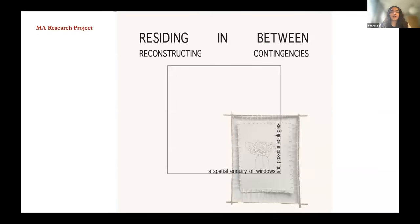My MA project is called Residing in Between: Reconstructing Contingencies — a spatial enquiry of windows and possible ecologies. The project looks at a very small threshold space, which is the window. The window is used as a spatial construct to look at different themes I was exploring. The nature of my practice was fragmented — it touched upon very personal themes, social and cultural context, and how the window in a domestic setting responds to spatial cues we grew up with but do not always acknowledge.